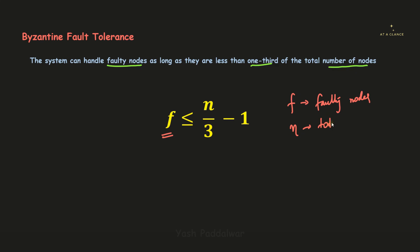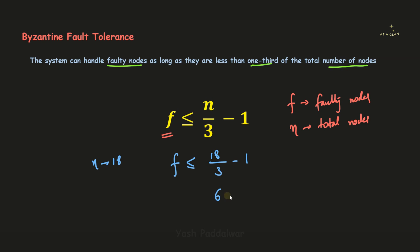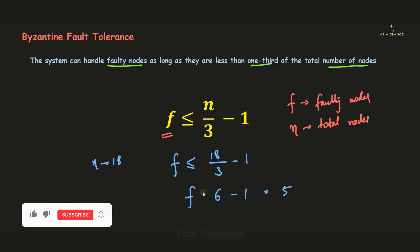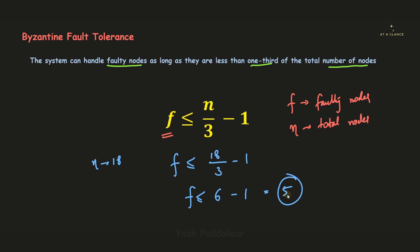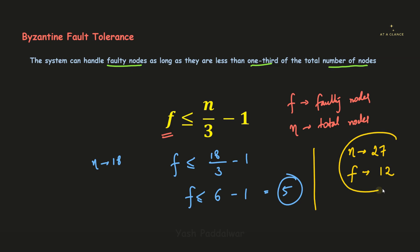Let's take a simple example. If the total number of nodes n is 18, we calculate the maximum faulty nodes the system can handle: f ≤ (18/3) − 1 = 6 − 1 = 5. So the maximum number of faulty nodes this system can bear is 5; if it exceeds that, the system will fail. Now, if the system has 27 total nodes and 12 faulty nodes, tell me in the comments whether this system will fail or work fine.